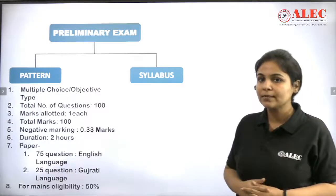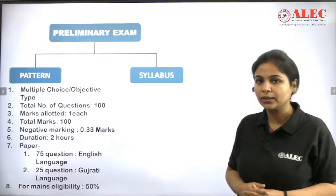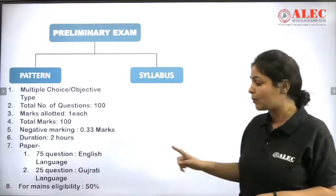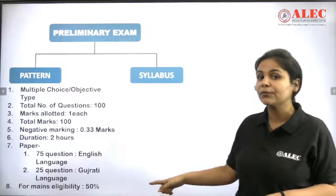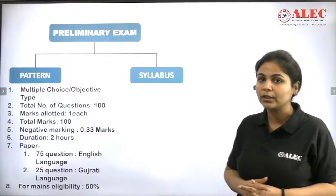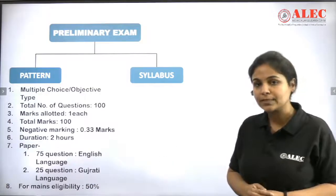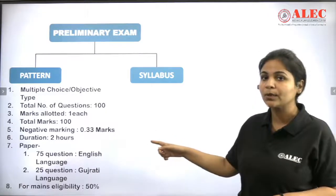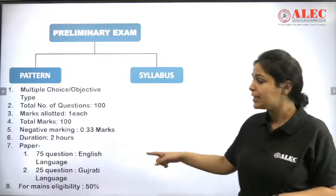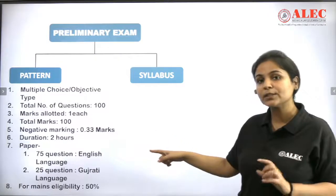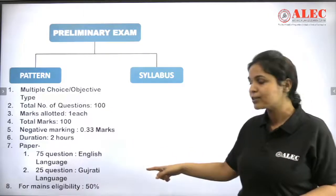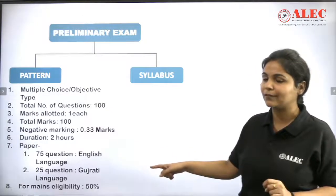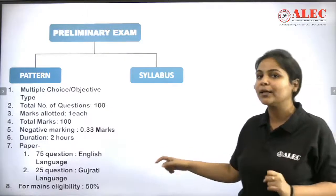Now let's note two specific points. First, if you have to write the mains, then you have to score a minimum of 50% in the prelims exam. There will be 100 questions. Out of that, 75 questions will be in English, but there will be 25 questions in Gujarati language. So prepare accordingly.